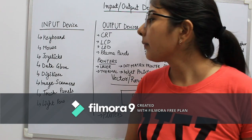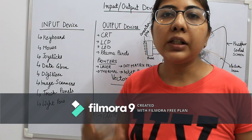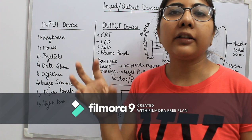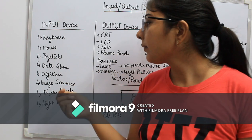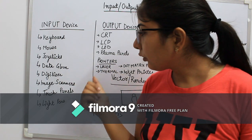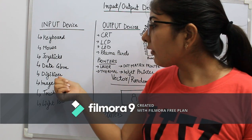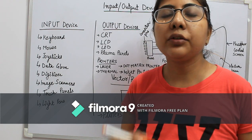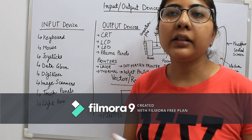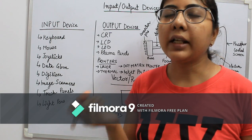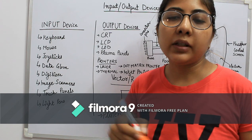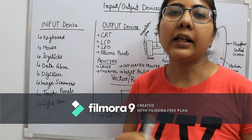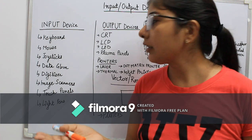Joysticks are usually used to play games. Data glove is something you need to wear on your hand and the inputs are detected through LEDs. Digitizers are a pad created to draw something — it contains a pen and if someone draws something on that pad, it will be scanned and copied to your system.